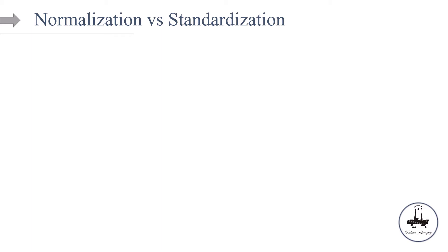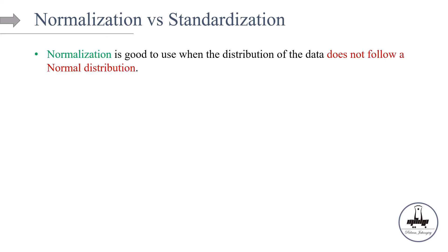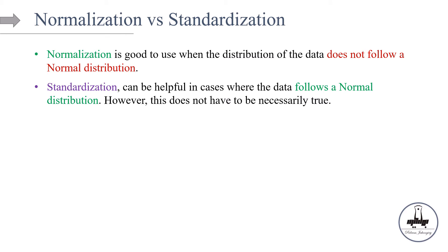Now let's talk about normalization versus standardization. The choice depends entirely on your problem and the machine learning algorithm you're using. As a rule of thumb: normalization is good when the data does not follow a normal distribution — and remember, normalization has nothing to do with normal distribution. If the data doesn't follow a normal distribution, normalization may be a better fit.